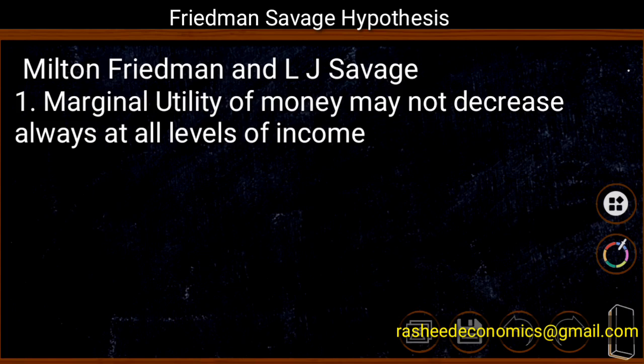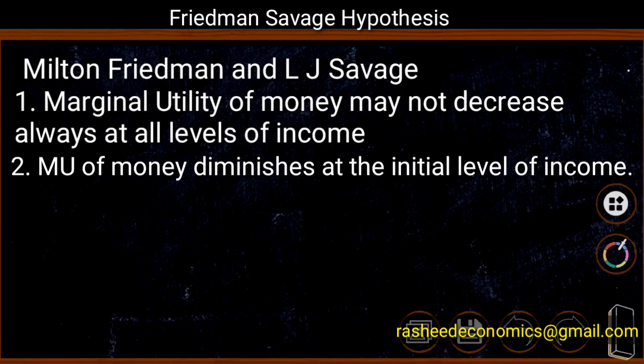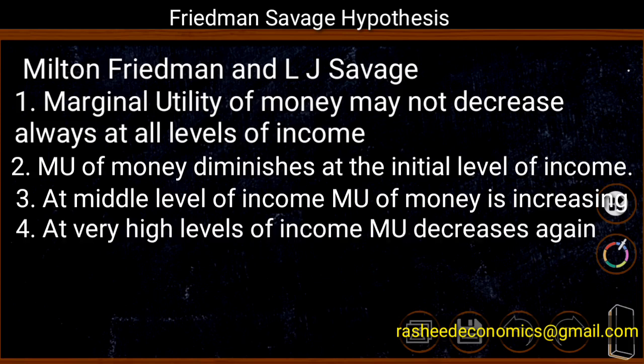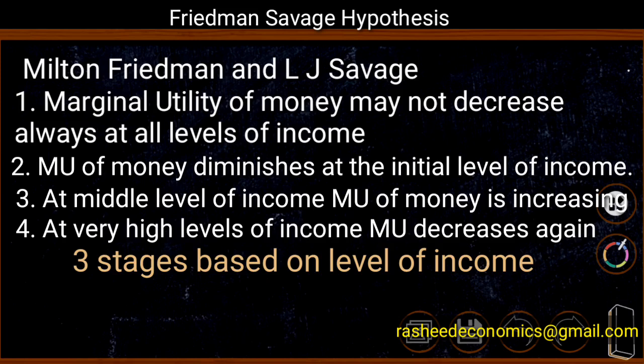According to Friedman and Savage, marginal utility of money diminishes at the initial level of income — up to a certain level of money income. At the intermediate level of income, the marginal utility of money is increasing. And at very high levels of income, the marginal utility of money is decreasing again. It means there are three stages to the marginal utility of money, based on the level of income of the consumer.